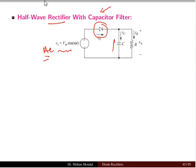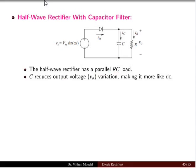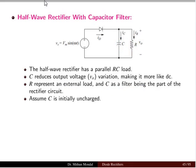The load comprises a resistor and a capacitor, so the half wave rectifier has a parallel RC load. The capacitor reduces the output voltage variation, making it more like a DC waveform. The R represents the external load whereas the capacitor is the representation of the filter in the rectifier circuit.